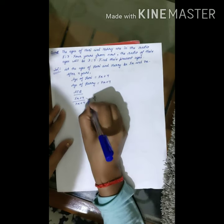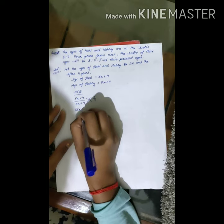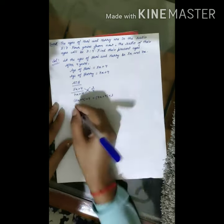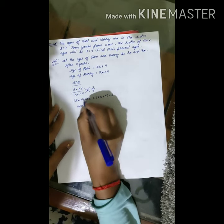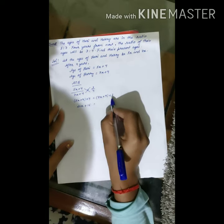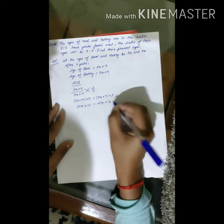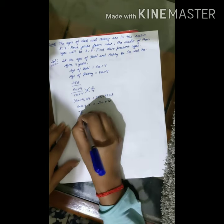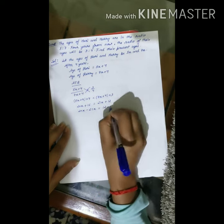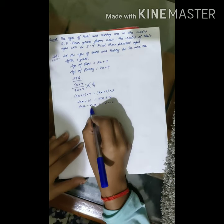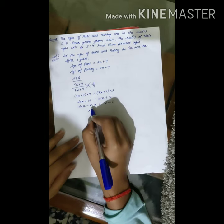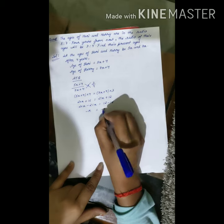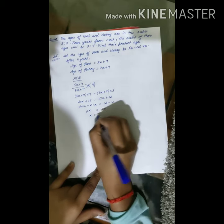Now we will do the cross multiplication. After cross multiplication, we get (5x + 4) × 4 = (7x + 4) × 3. Solving the brackets: 20x + 16 = 21x + 12. We transpose 21x to LHS and 16 to RHS: 20x - 21x = 12 - 16, giving -x = -4. Both negative signs cancel, so x = 4.